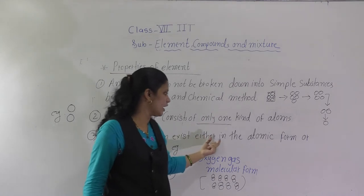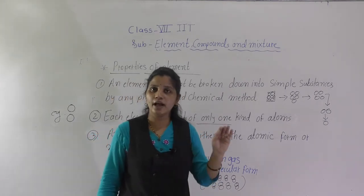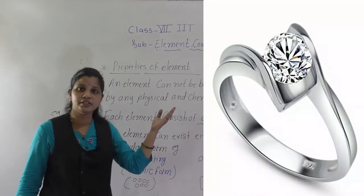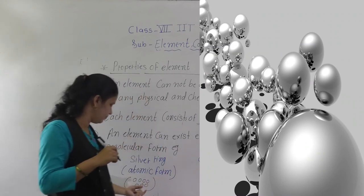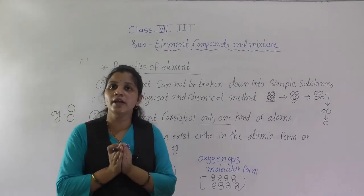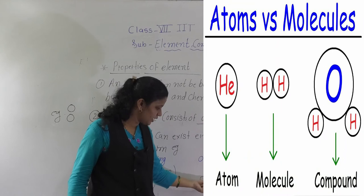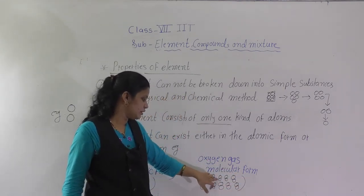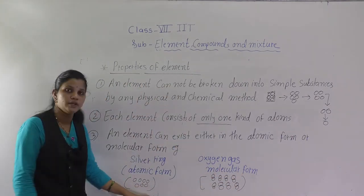An element can exist either in atomic form or molecular form. For example, a silver ring exists in atomic form — all the atoms of silver are arranged individually. Oxygen gas exists in molecular form. When one or more atoms combine together they form a molecule. Oxygen has two atoms of oxygen combined, so it is in molecular form, while silver is in atomic form.